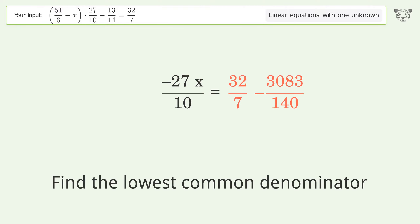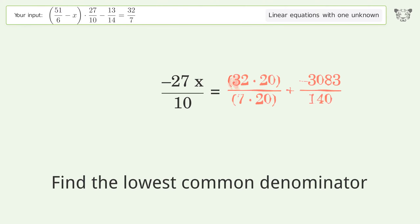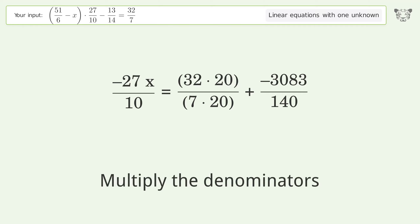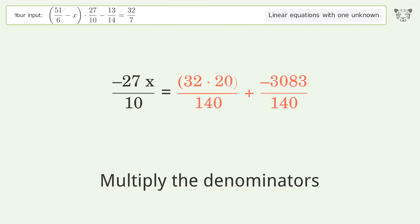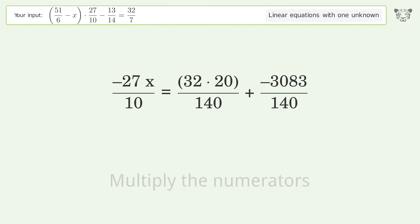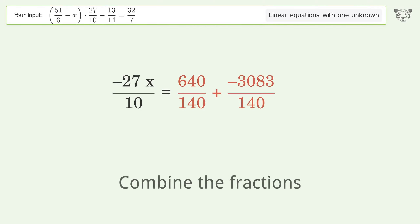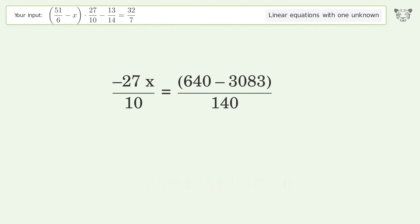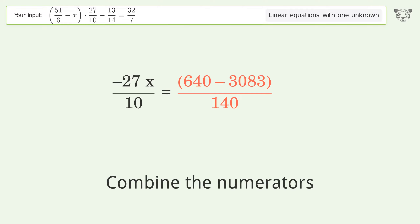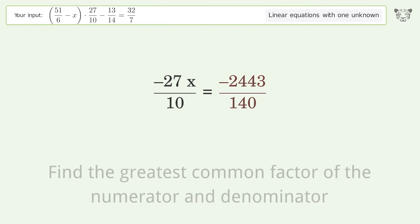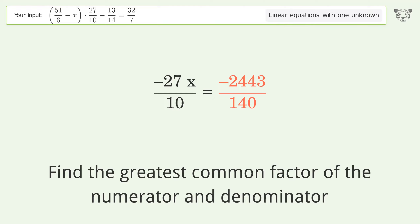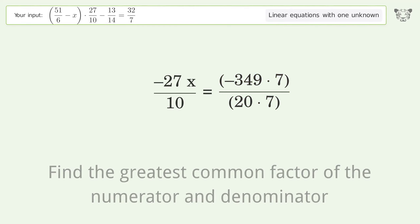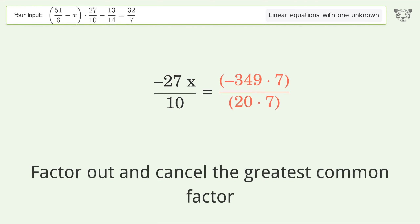Find the lowest common denominator, multiply the denominators, simplify the numerators, combine the fractions, combine the numerators, find the greatest common factor of the numerator and denominator, then factor out and cancel the greatest common factor.